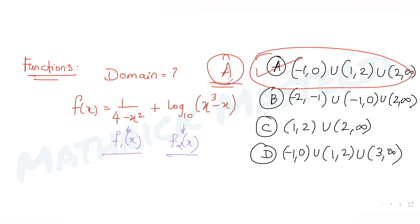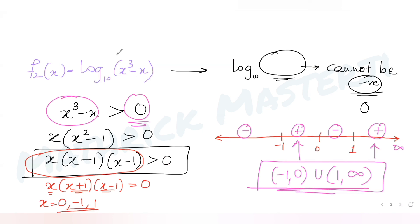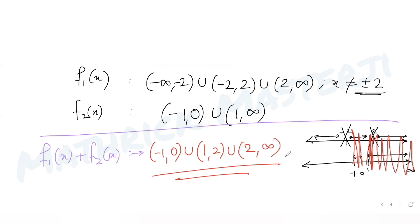To summarize: we separated the function into f1(x) and f2(x), found where each becomes undefined, and excluded those values from the domain. For f1(x), x ≠ ±2. For f2(x), the log argument x³ - x must be positive, giving (-1, 0) ∪ (1, ∞). Combining both gives option A as the correct answer.